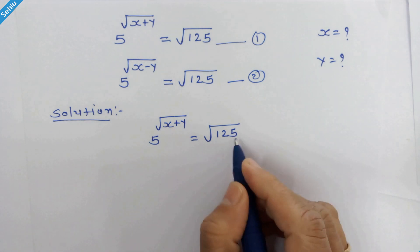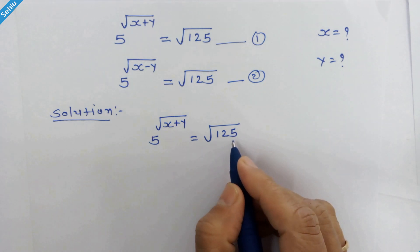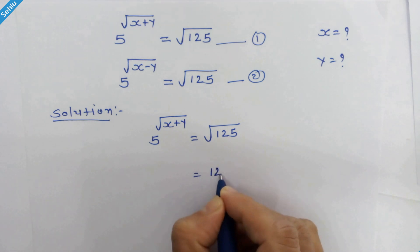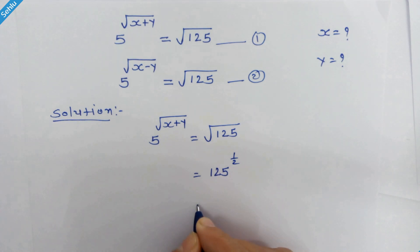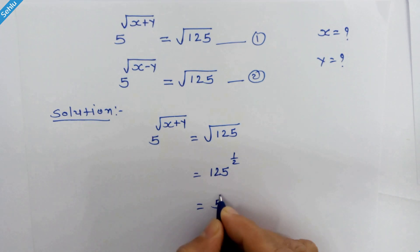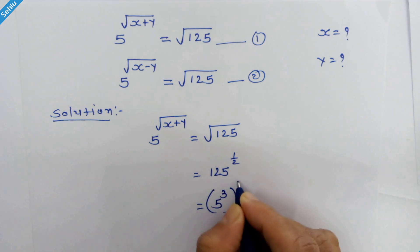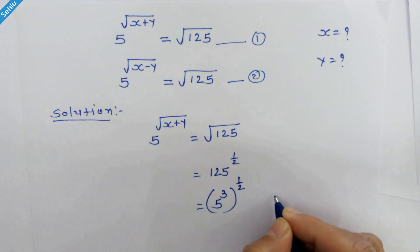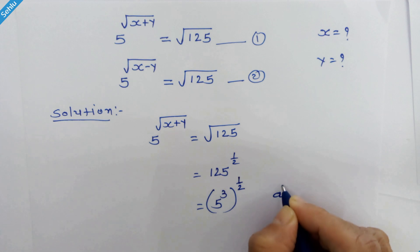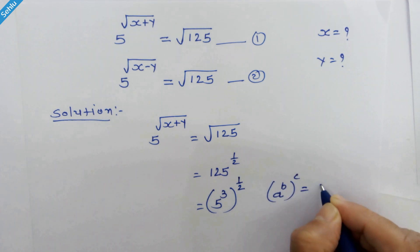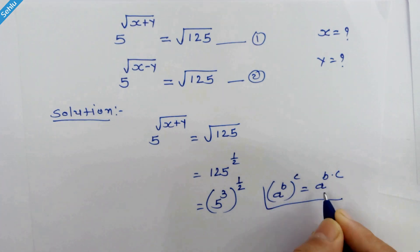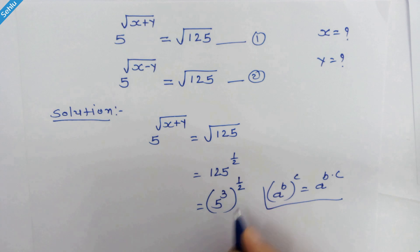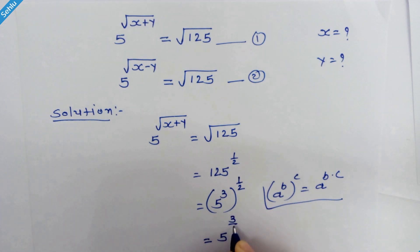We have square root of 125, so let's evaluate this as 125 raised to 1/2. Now 125 is 5³ whole raised to 1/2. Using the rule that (a^b)^c = a^(b×c), we can multiply 3 and 1/2, giving us 5 raised to 3/2.